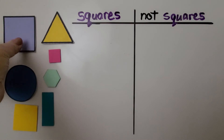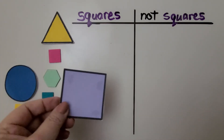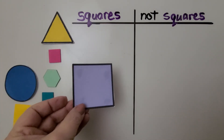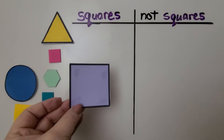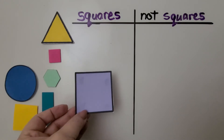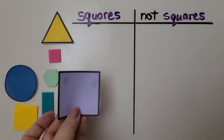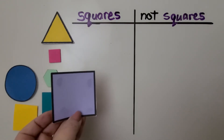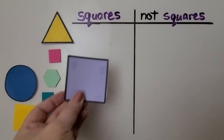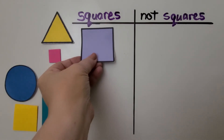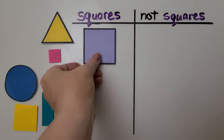Do you think this is a square? Does it have four sides that are straight and match? Does it have four corners, four vertices? Yes, it does. We can put it here on the side for squares.